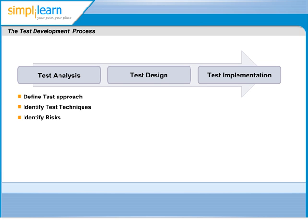Test design involves the creation of test cases and test data. Test conditions, on their own, can be rather vague, covering quite a large range of possibilities. As mentioned earlier, test conditions just mention what to test. These do not include how to test.